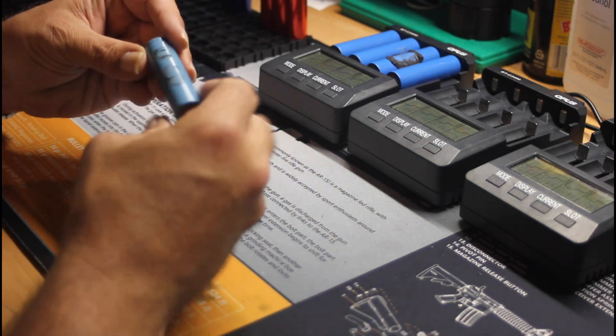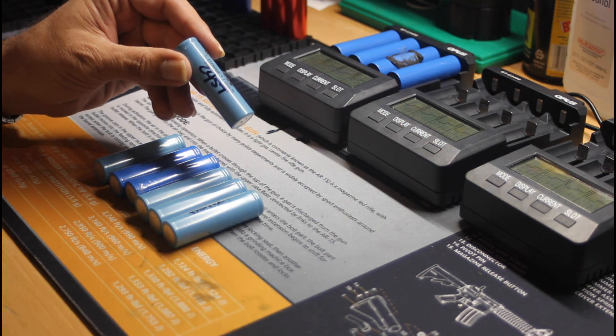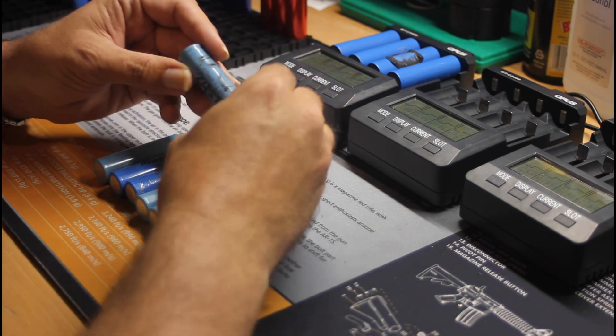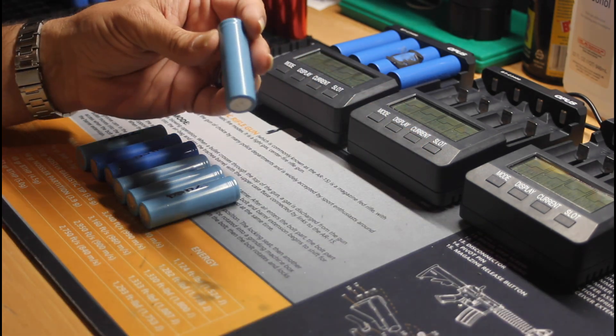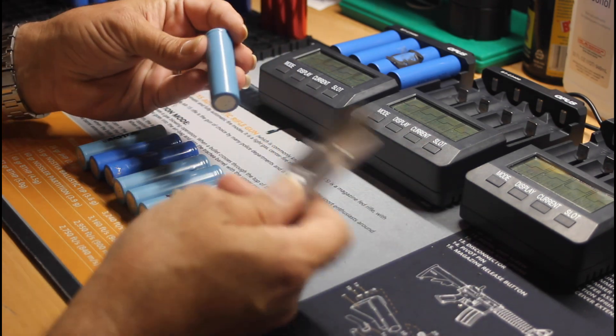I have a bunch of cells here that are off the charger and off the test cycle, basically getting ready to build into packs. To do this, I just use a little razor knife. You can use pretty much anything you have.